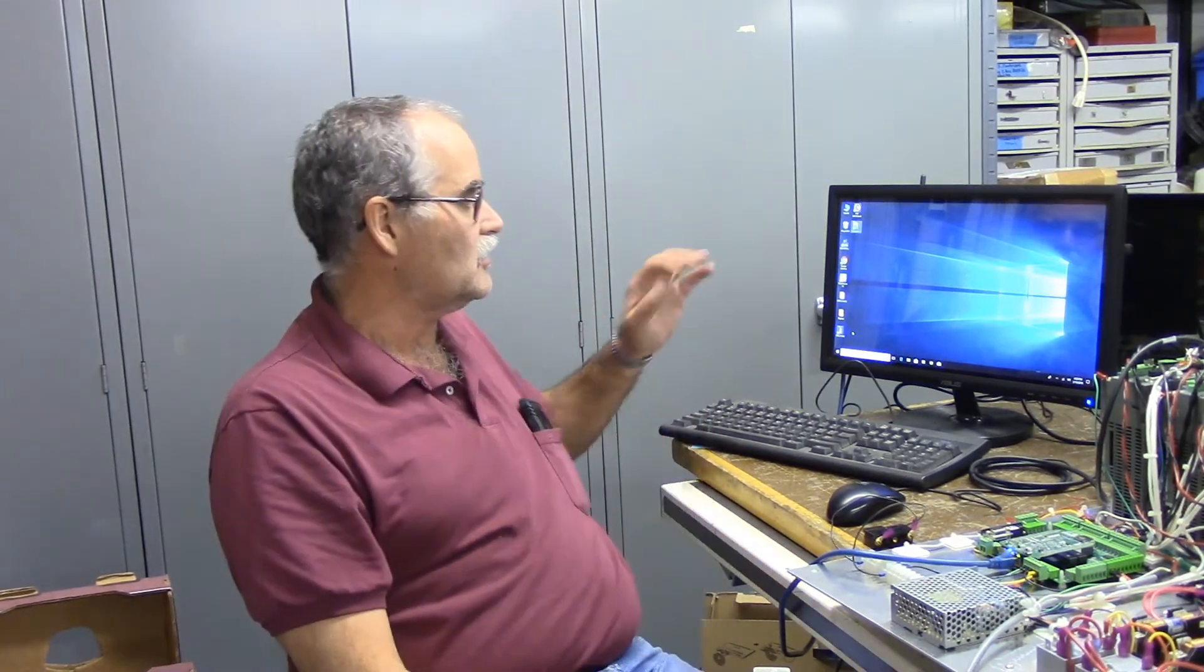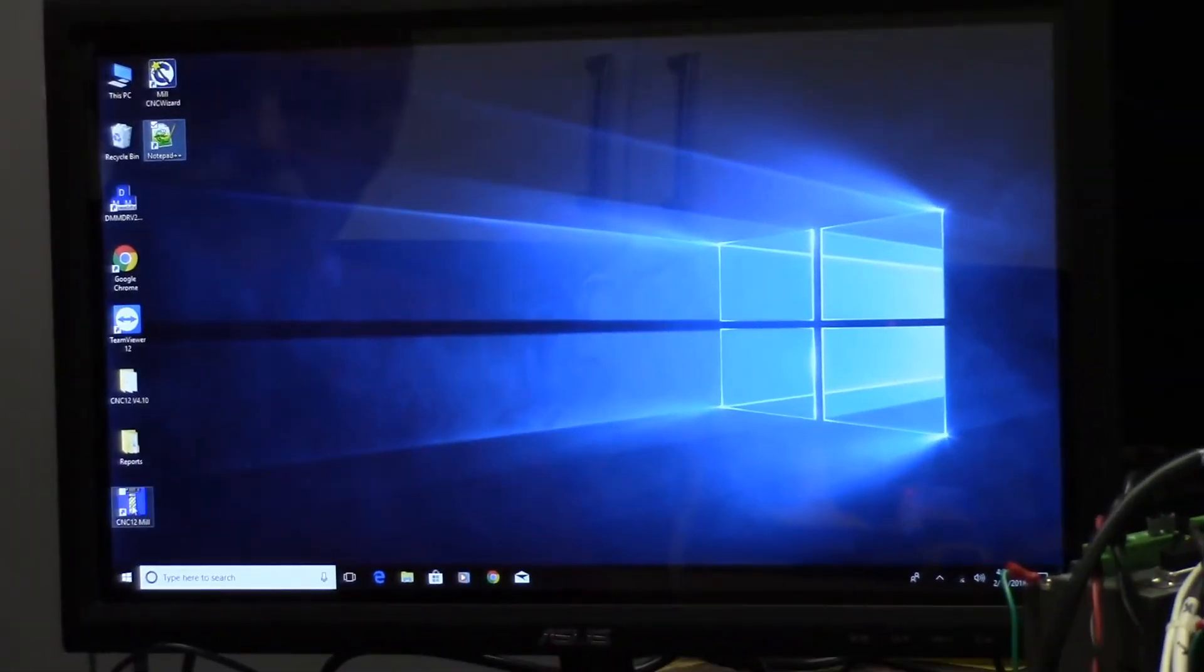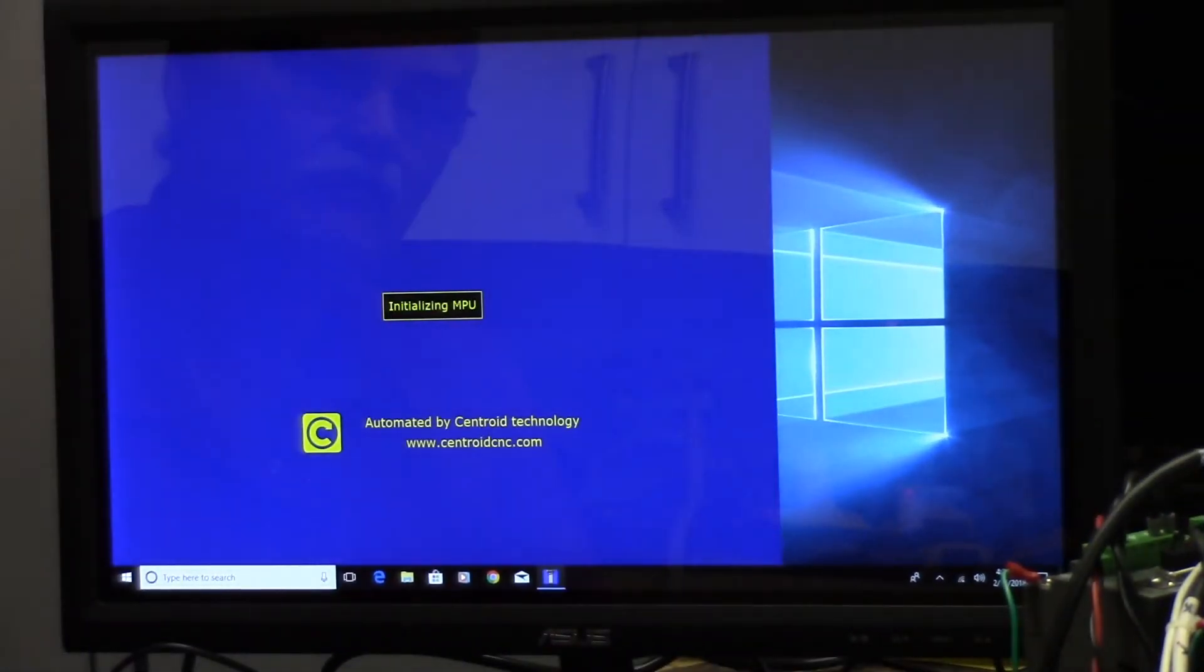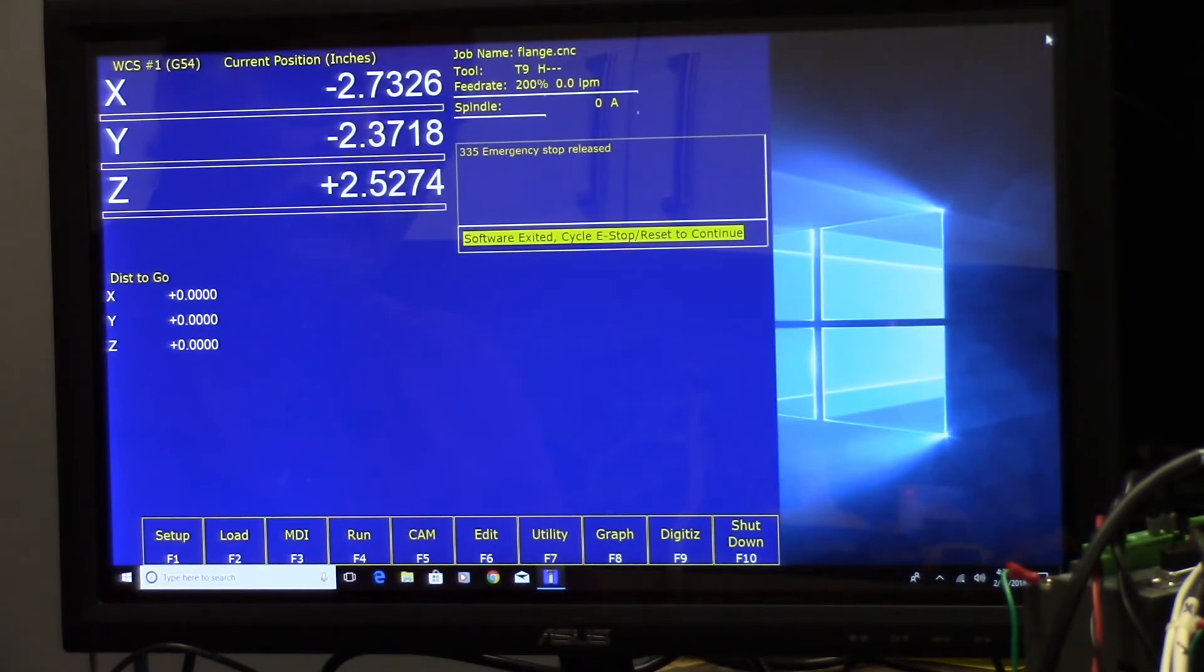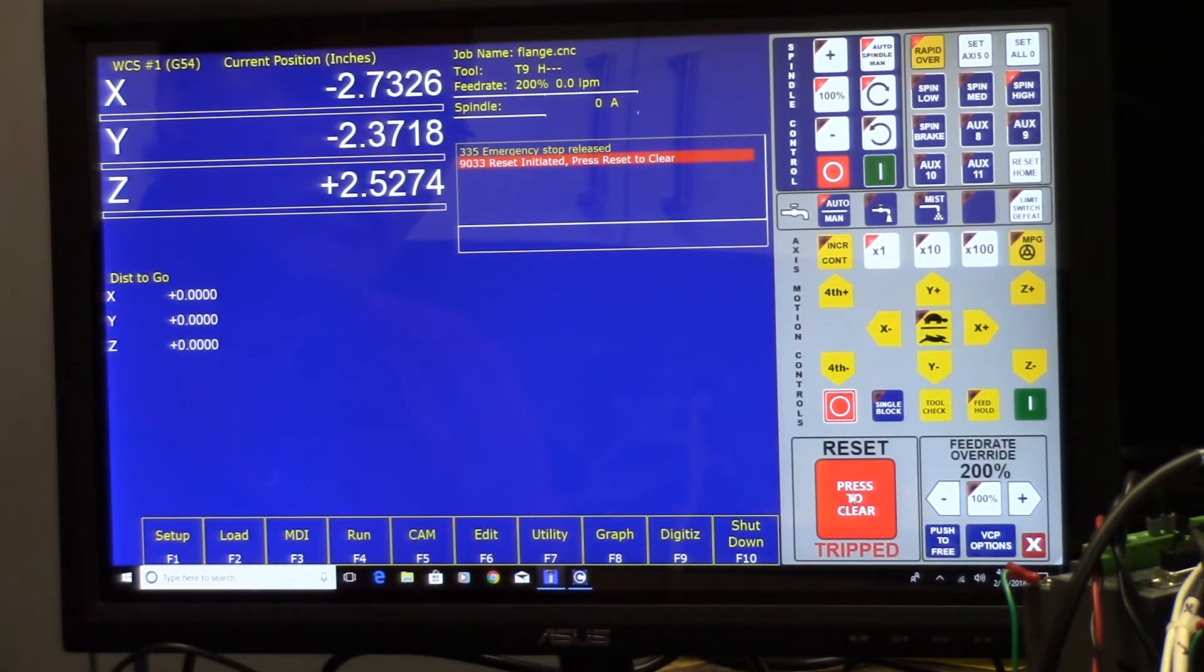Alright, let's start CNC12. I've had it running, so this is software exit. Cycle stop to reset or reset to continue. I'm just going to cycle the virtual control panel, reset. It's cleared, it's ready to go.